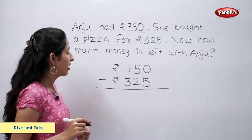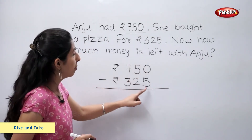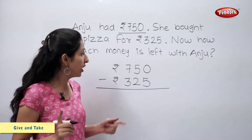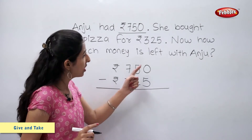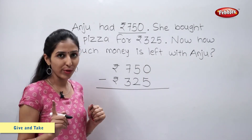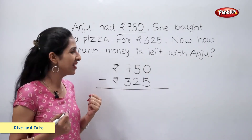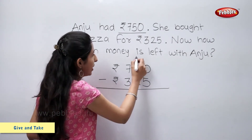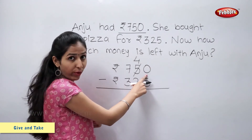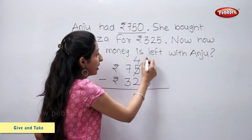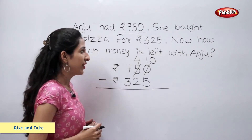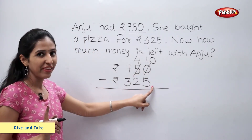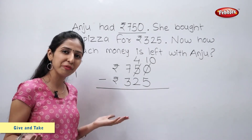Let us count. 0 minus 5 — students, it is not possible to subtract 5 out of 0. So, we will borrow. 5 becomes 4, 0 becomes 10. Now, 10 minus 5 is equal to 5.